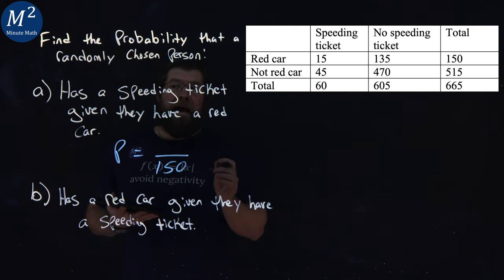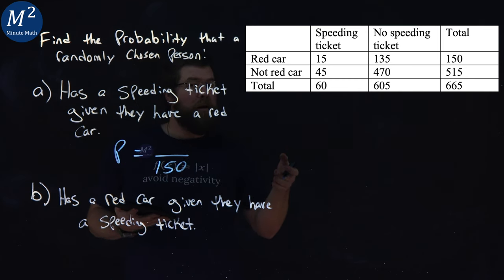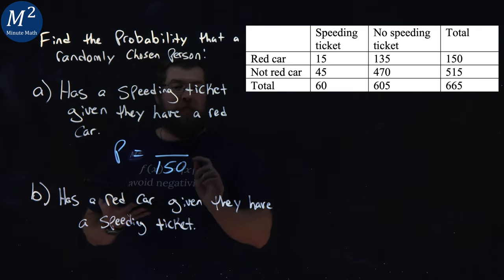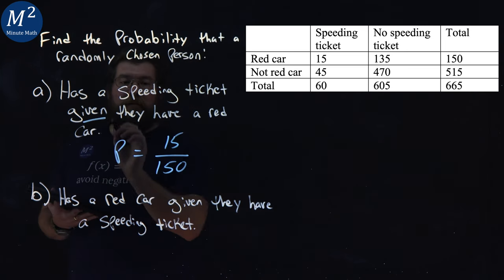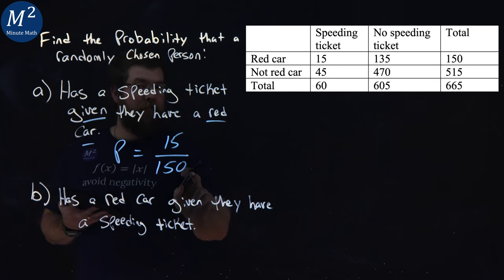From that, the probability of a speeding ticket given they have a red car, we just look at that first row of red car and there are 15 people who have a speeding ticket, because we were given they had a red car and have 150.